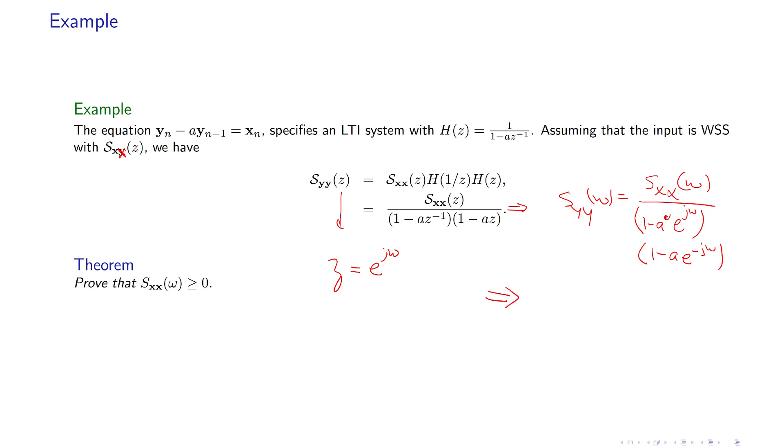So in that case, you get S_yy of omega becomes S_xx of omega times H of omega to the power of 2, which is Fourier transform of that.